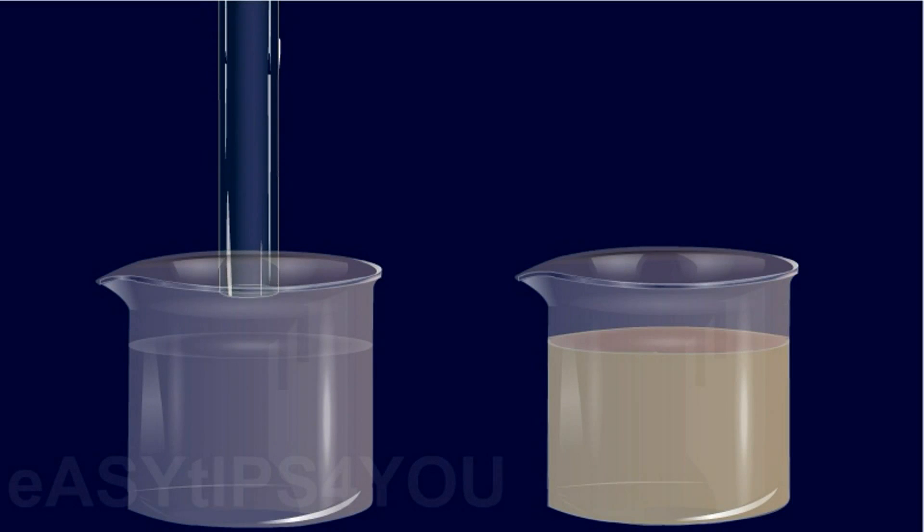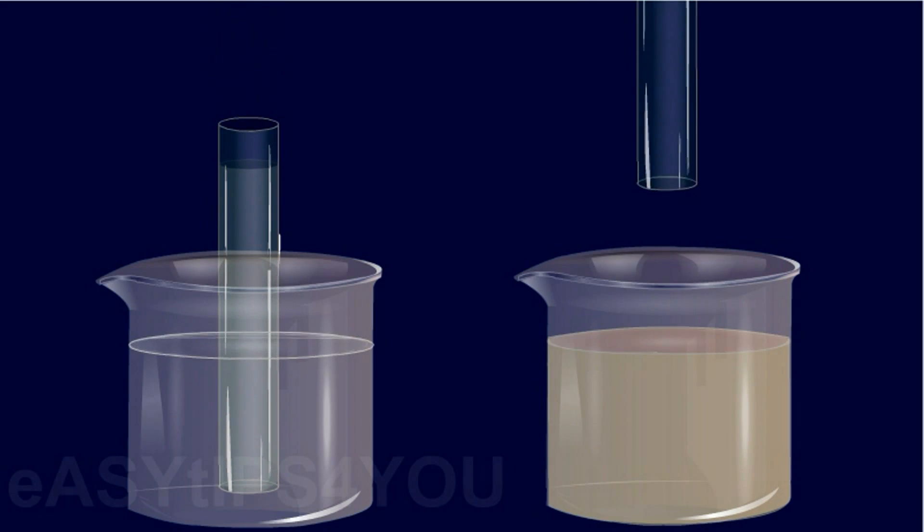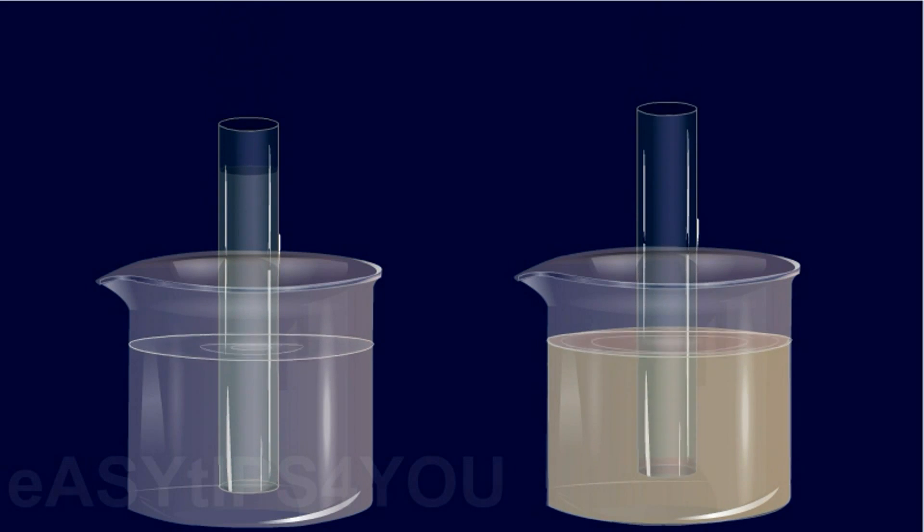When a capillary tube is dipped vertically into a liquid contained in a beaker, the liquid immediately rises or falls in the tube. The rise or fall of a liquid in a very narrow capillary tube is given by h equals 2t cos theta divided by r rho g.